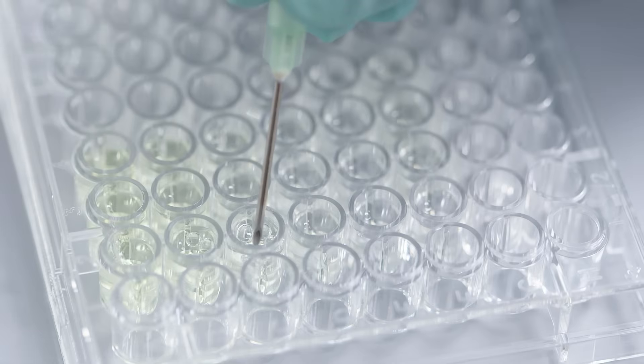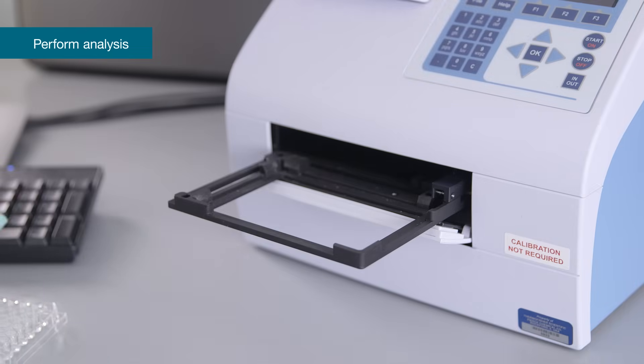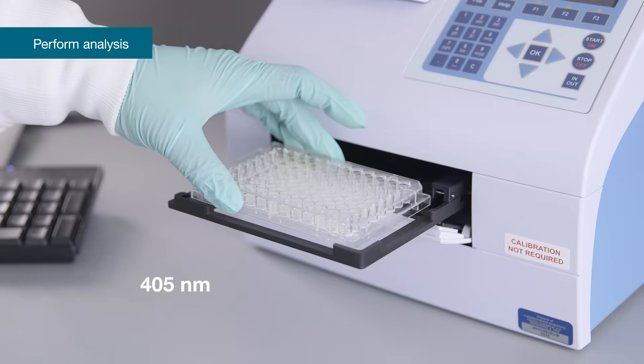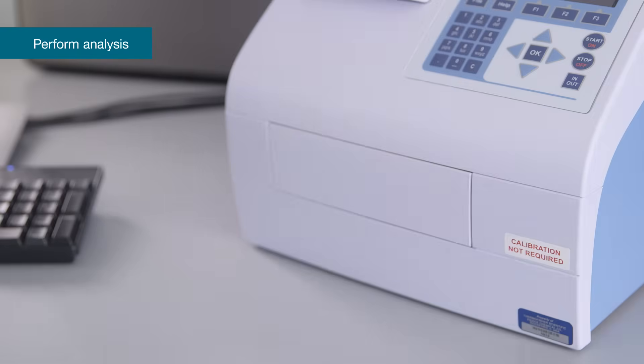Watch for bubbles as they will affect the optical reading. Use a micropipette tip or a needle to eliminate the bubbles. Read the optical density at 405 nanometers immediately after assay completion. If the plate is read at a later time, keep it covered to avoid evaporation.